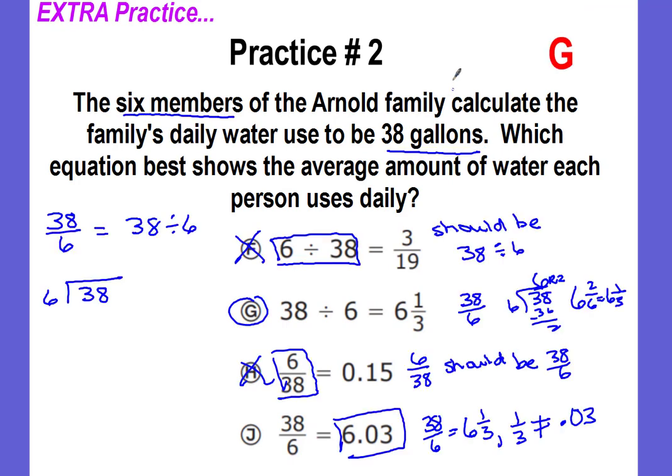The correct answer is G, 38 divided by six equals six and one-third. Did you get it right? If so, go ahead and move on to the third practice problem. If not, pause the video and take a look at the work that is shown for each answer choice to see if you can determine where your mistake was before you move on to practice problem three.